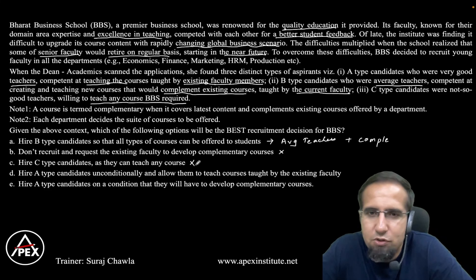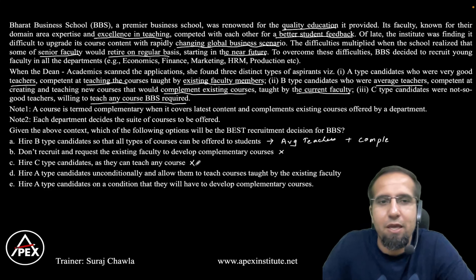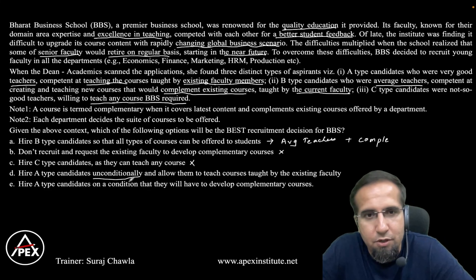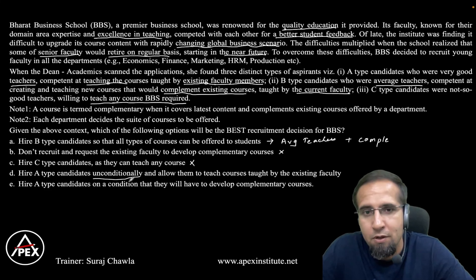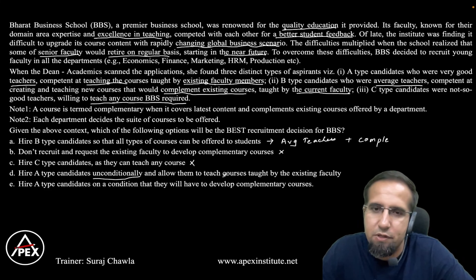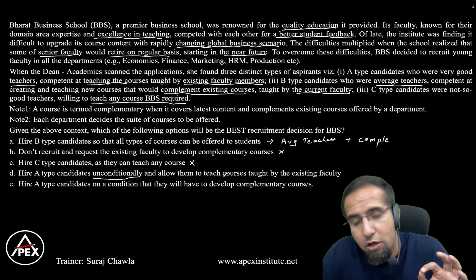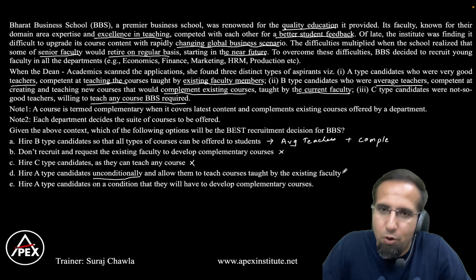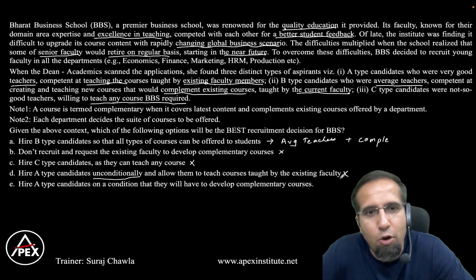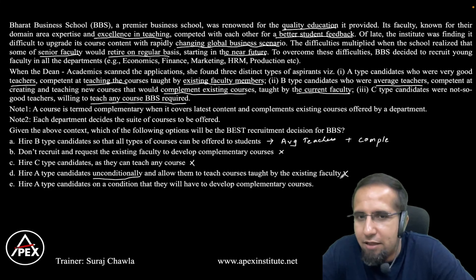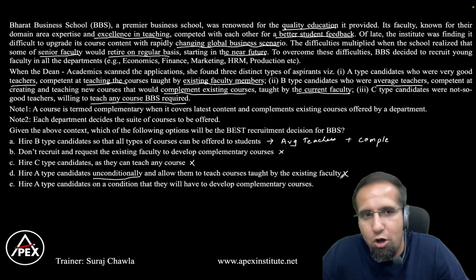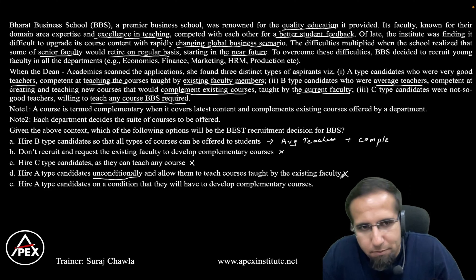Option D: hire Type A candidates unconditionally and allow them to teach courses taught by existing faculty. Type A faculty are very good teachers, which is a positive, but hiring them unconditionally doesn't address the second challenge of making complementary courses. This option is clearly talking only about teaching existing courses, not about complementary courses or upgrading with a rapidly changing business scenario. So option D does not solve all the problems. Let's look at option E: hire Type A faculty on condition that they will develop complementary courses.